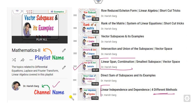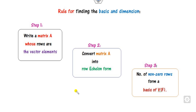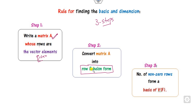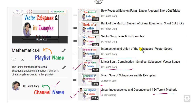You must follow those two lectures before watching this one. What is the rule for finding the basis and dimension? We can summarize them in a three-step rule. The first step is to write a matrix A whose rows are the given vector elements. Then convert them into row echelon form and count the number of non-zero rows.